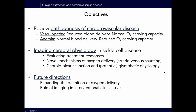The objectives of the talk are threefold. First, I'll start by reviewing the pathogenesis of cerebrovascular disease, which is usually focused on vasculopathy — narrowing of the blood vessel through steno-occlusion that leads to reduced blood oxygen delivery in the face of normal oxygen carrying capacity. Then I'll talk mostly about anemia, which is the opposite: normal blood delivery but reduced oxygen carrying capacity. Since this is an imaging cerebral physiology group, I'll focus on imaging physiology in the presence of anemia — specifically sickle cell disease.